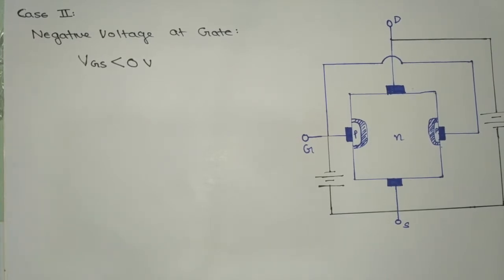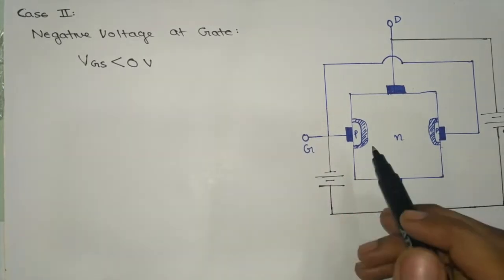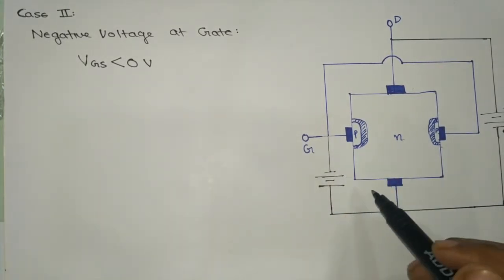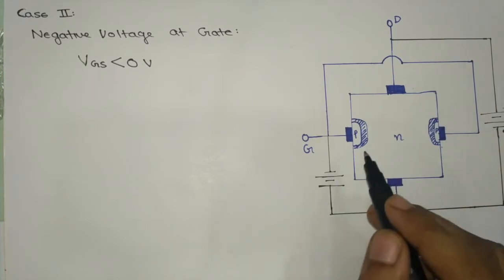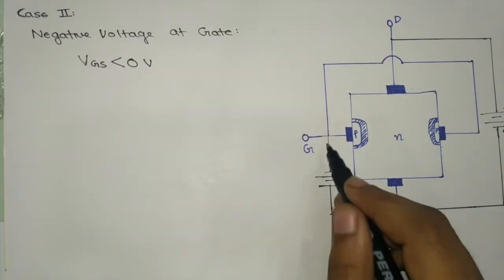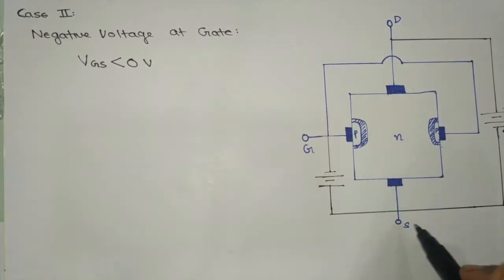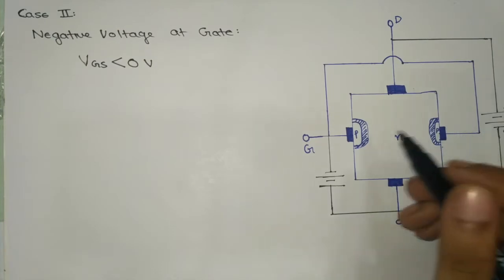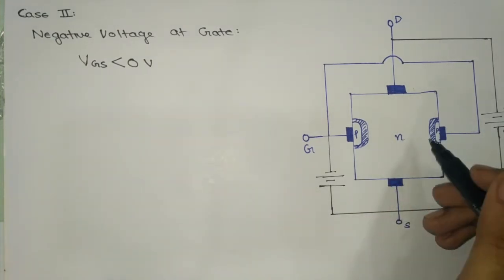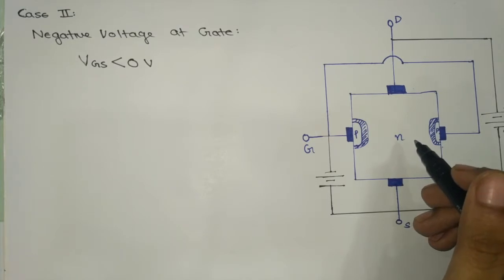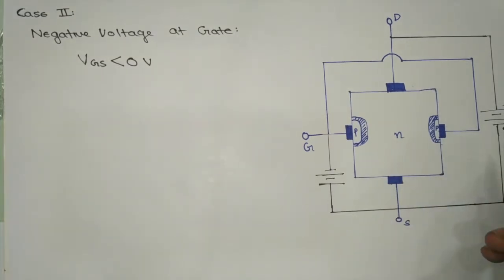Now for the second case: VDS is greater than 0, and unlike the previous stage where VGS was equal to 0, here VGS is less than 0, or a negative potential. That is, the negative terminal of the battery is connected at the gate and the positive terminal is connected at the source. Therefore the P-type of the PN junction is already connected at a lower potential.